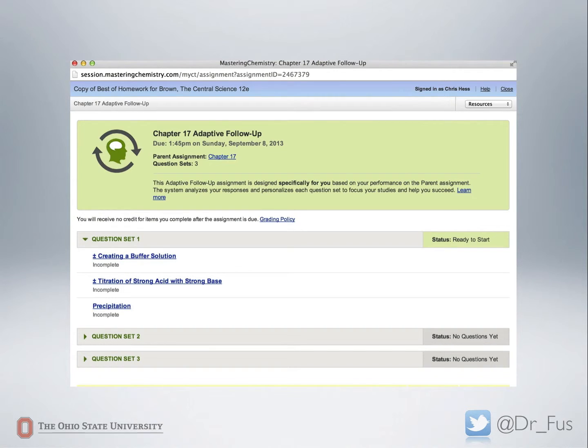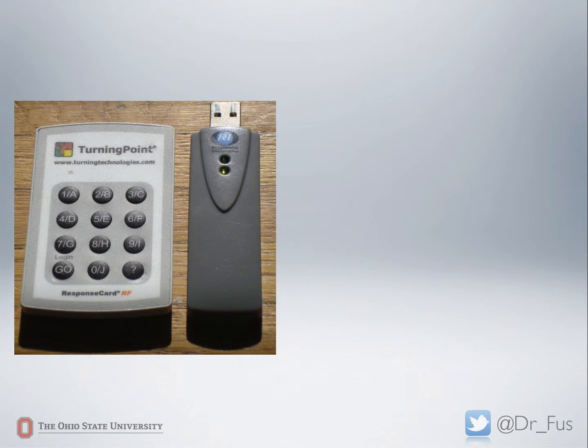They can also test out of these if they get, and you can set the tolerance on that, where if a student gets a 95% on the parent assignment, they don't have to do the adaptive follow-up.